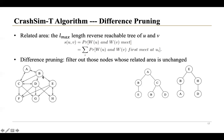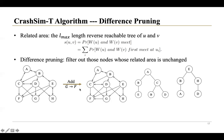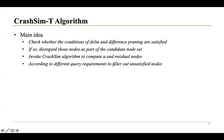The second pruning rule is the difference pruning. Since S(U,V) only depends on the walks W_U and W_V, the related area of S(U,V) is the L_max-length reverse reachable tree of U and V. Difference pruning filters out nodes whose related area is unchanged. In a running example with L_max equal to 2 and the candidate node set containing only E, if we add an edge involving H, the reverse reachable tree remains unchanged, so there is no need to recompute SimRank scores of A and E. With these pruning rules, we have our CrashSim-T algorithm.